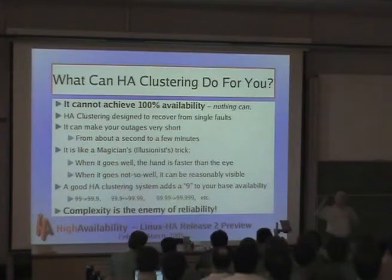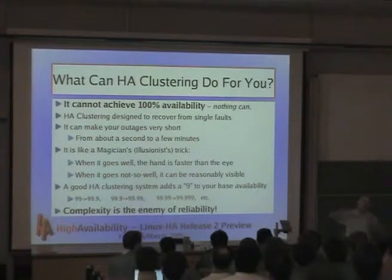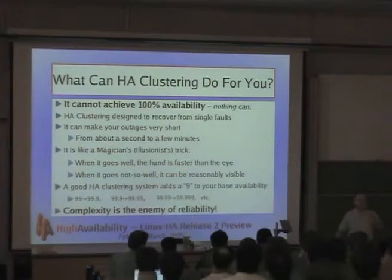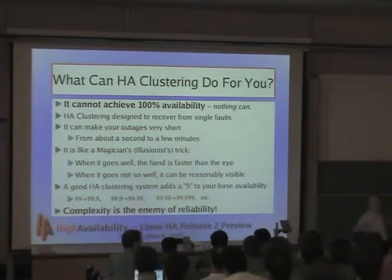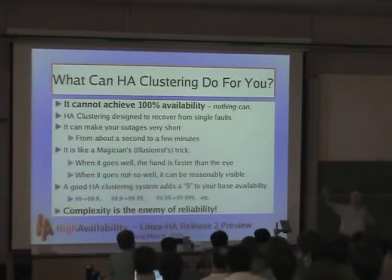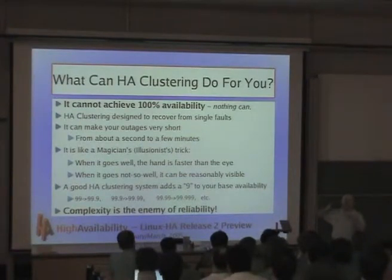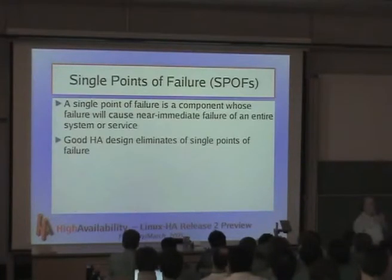HA is designed to improve your availability. It's one of the few things you can do for a relatively modest investment that will cut your downtime by 90%. That means you're still left with 10%, so it adds a nine to your availability. As you try to improve it more and more, it gets more and more complex, and eventually your complexity becomes your enemy — it becomes so complex you can no longer maintain it. Complexity is the enemy of reliability.